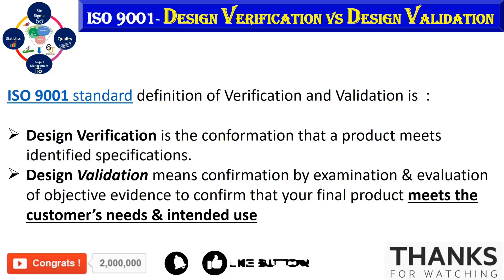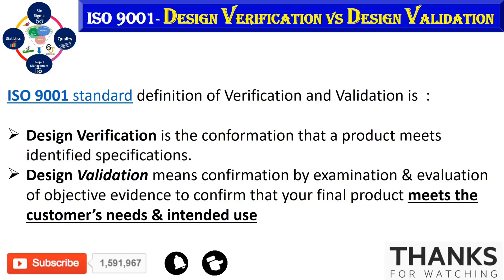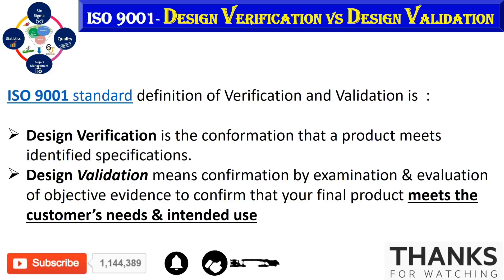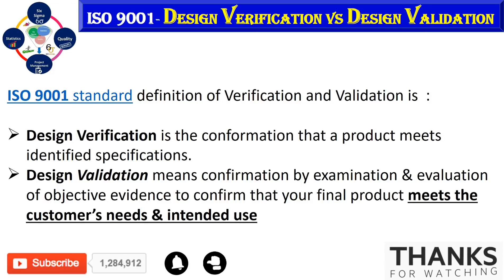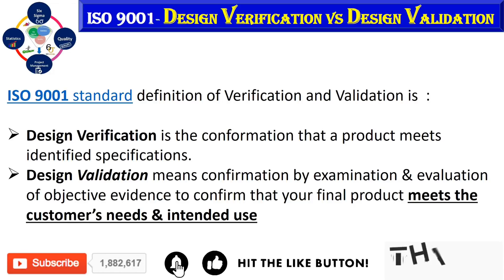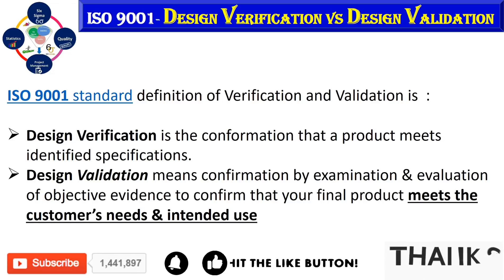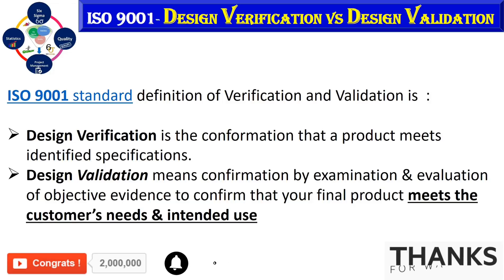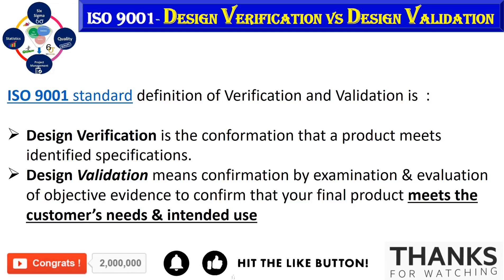ISO 9001 has two relevant sections. Section 8.3.4C states that verification activities are conducted to ensure the design and development outputs meet the input requirements — that is, your functional requirements and specifications. Section 8.3.4D states that validation activities are conducted to ensure that the resulting products and services meet the requirements for the specified application or intended use — that is, your customer needs.